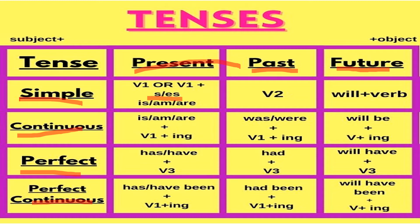In past tense, we use the second form of the verb. For example, in present tense we say 'I go to school,' but in past tense we say 'I went to school.' 'Went' is the second form of 'go.'